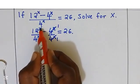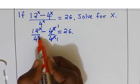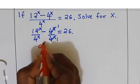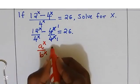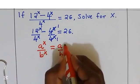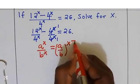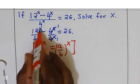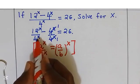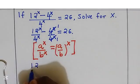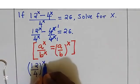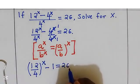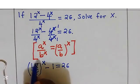We are going to put 12 and 4 power x into a single power. Because we know if we are given a over x divided by b over x, this is the same as a over b, all of them to the power x. Now 12 power x over 4 power x is going to be 12 over 4, power x, minus 1. This is equal to 26. And 12 divided by 4 gives us 3.